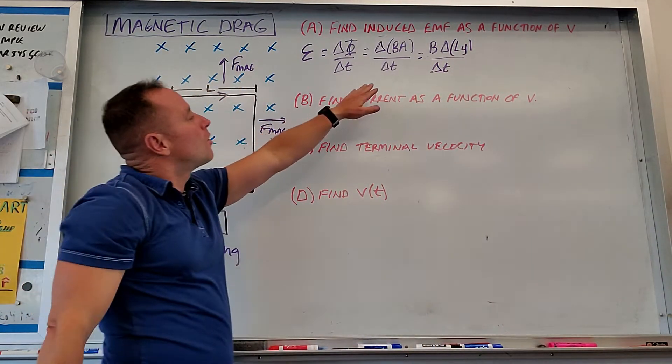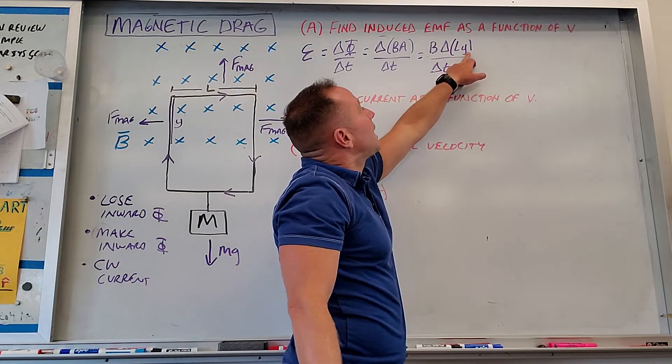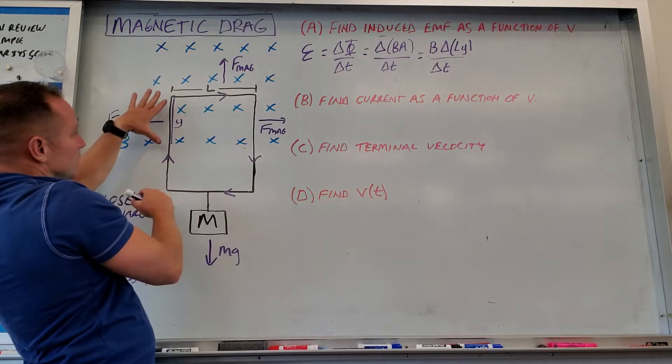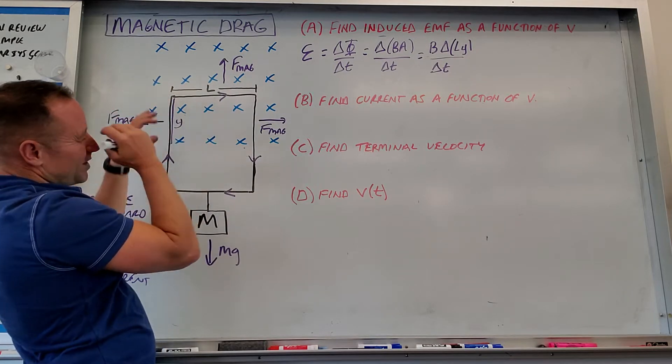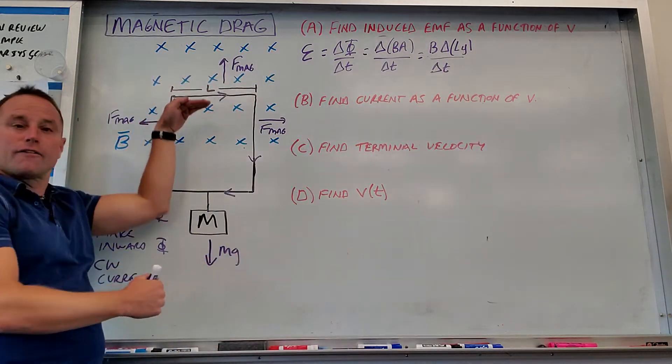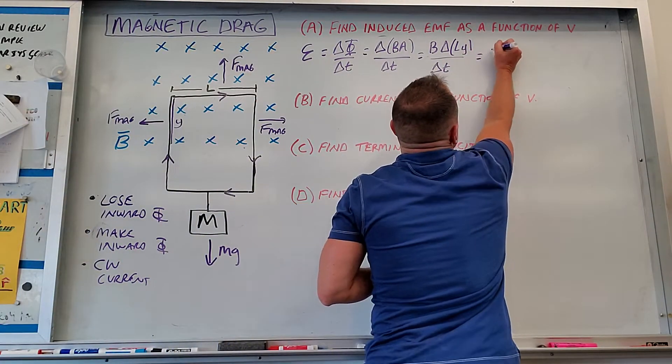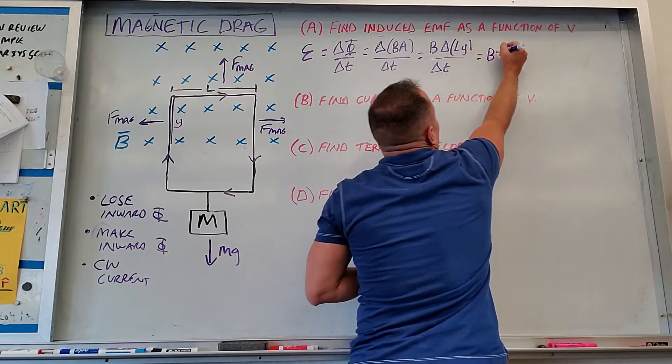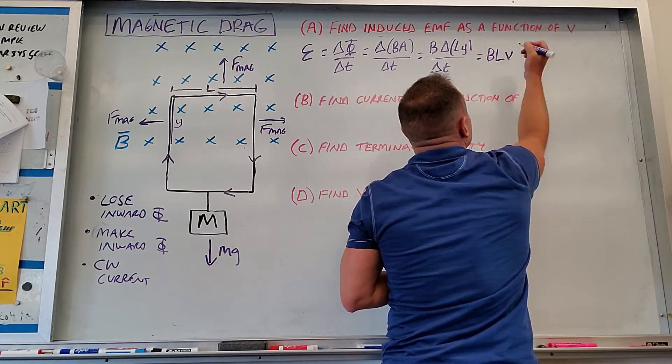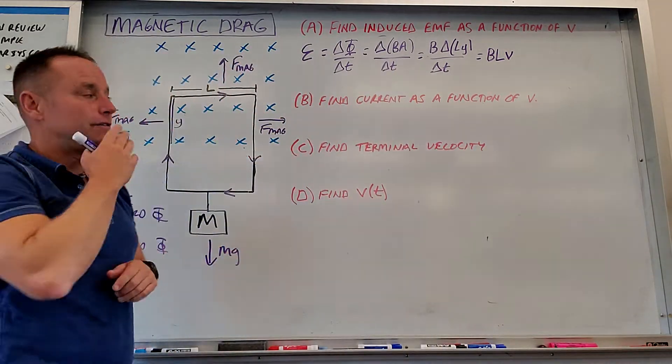If you notice that only Y is changing here, this L dimension stays the same. So this Y dimension is going to change as it falls out of the field. Delta Y over delta T, that's just how fast it's falling. And so what you get is B times L, which is constant. And then delta Y over delta T is nothing other than how fast it's falling. So this is BLV.